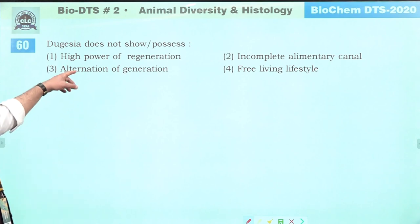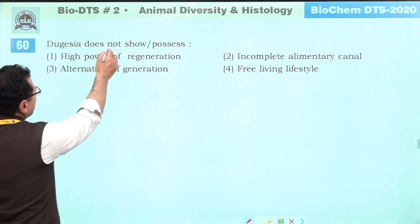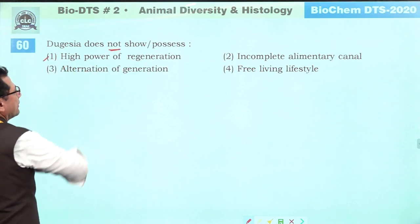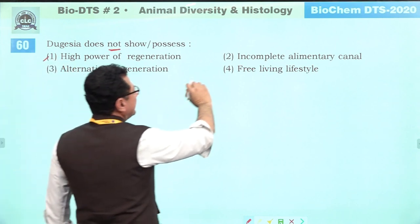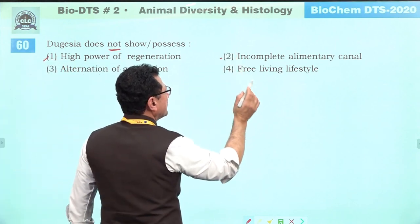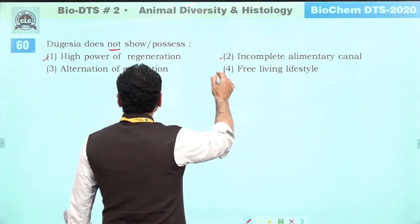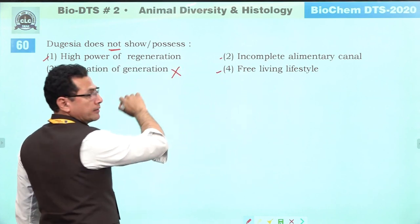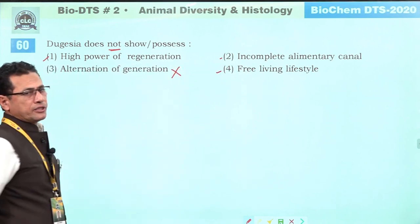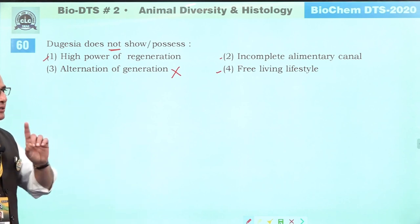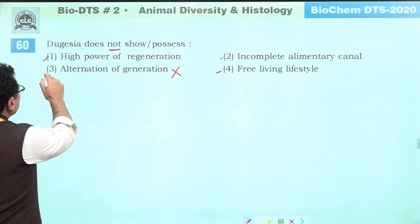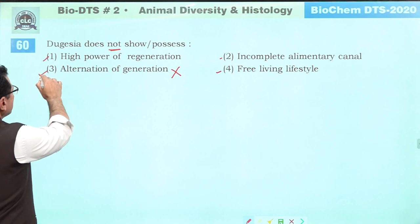Dugesia does not show: high power — present. Incomplete alimentary canal — present. It is free-living — yes. Alternation of generation — Dugesia does not show alternation of generations; they show only sexual reproduction. So answer is three.